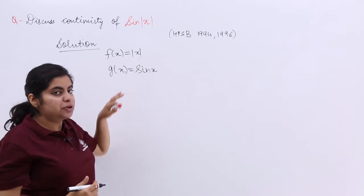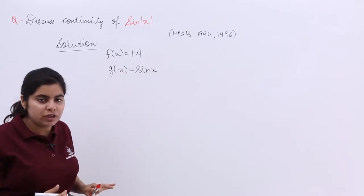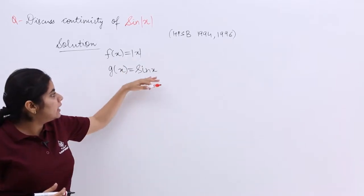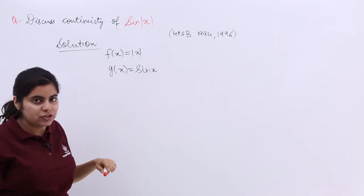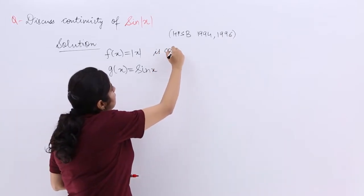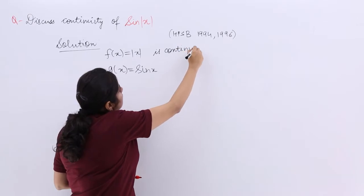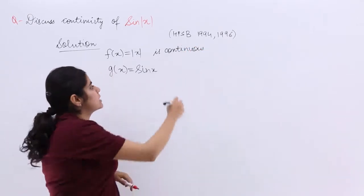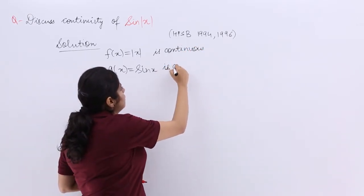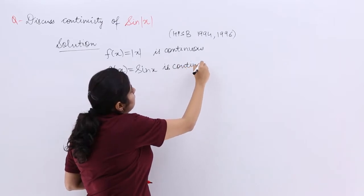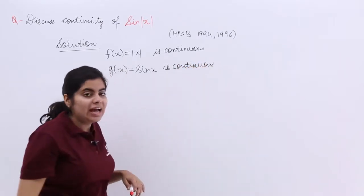Now, |x| is a continuous function. The other thing, sin x, is also a continuous function. So |x| is continuous, and sin x is also continuous.